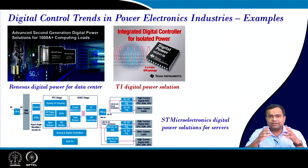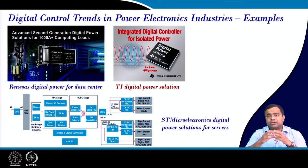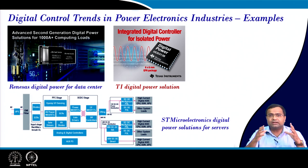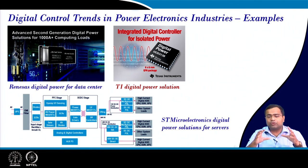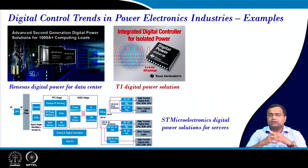Another example is the Texas Instruments UCD3138 IC, which can be used for various types of isolated DC-DC converters. This single IC can be programmed and configured to accommodate various topologies and even support multiple converters at different power levels.